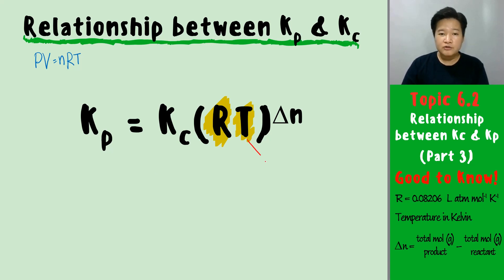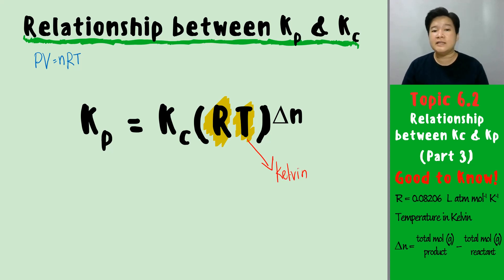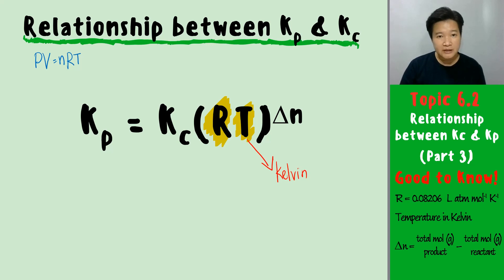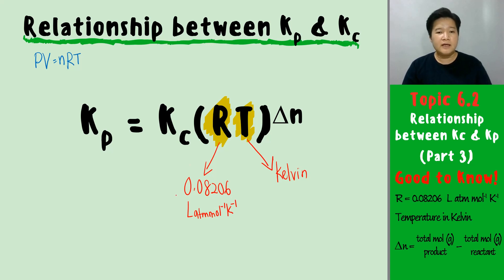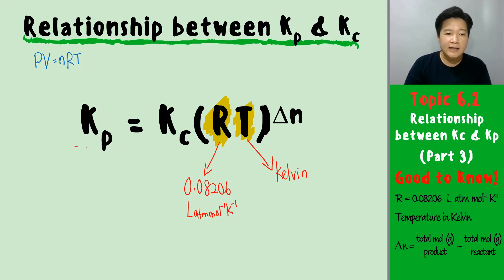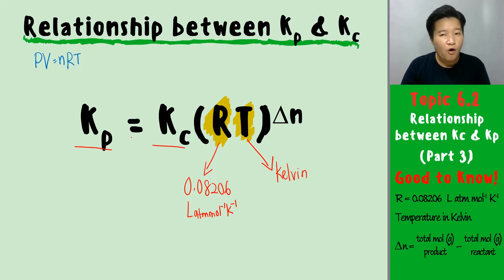Therefore, your temperature must be in Kelvin, because it comes from the ideal gas equation. The R value that we use will be 0.08206 liter·atm per mol per Kelvin. That is our R value that we will use in this formula. Kp and Kc are the values we are looking for or that are given.